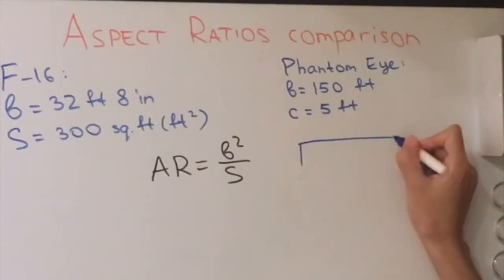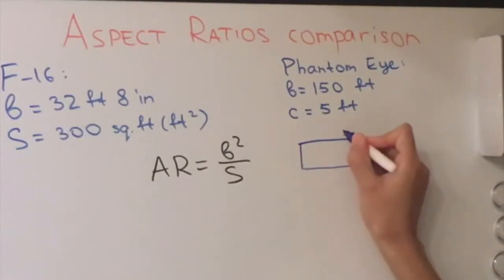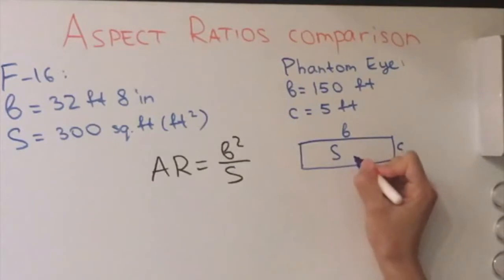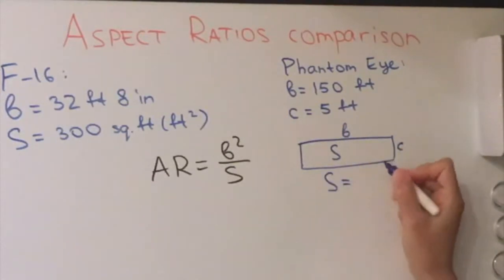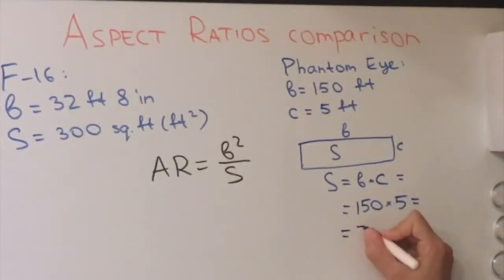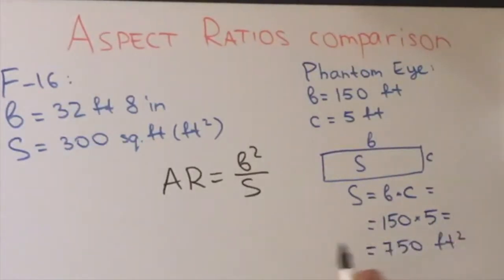If we look at the rectangular wing we have a wingspan and a cord. So the area will be equal to B multiplied by C which is equal to 150 multiplied by 5 which gives us 750 square feet. So at this point we can find the aspect ratios.